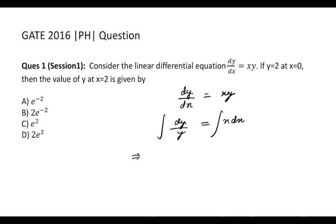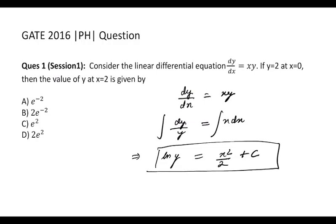The integration of 1/y will be ln y (natural log), and on the right hand side we'll get x²/2 + c. Now they've also given the initial conditions: if x = 0, y = 2. So y is 2, x = 0.